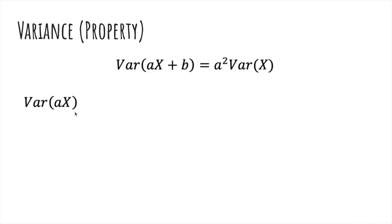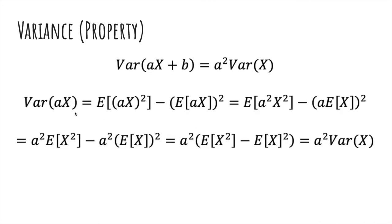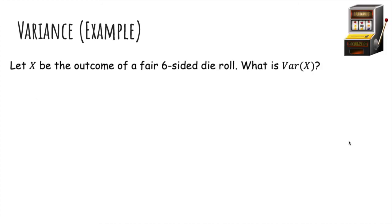And now to find the variance of ax, you can actually just do the algebra, which I'm going to skip here, and you get a squared variance of x. So let x be the outcome of a fair six-sided die. What is the variance of x? So what we're going to use is this formula. The expected value of x is just 1 times 1/6 plus 2 times 1/6 plus all the way to 6 times 1/6.